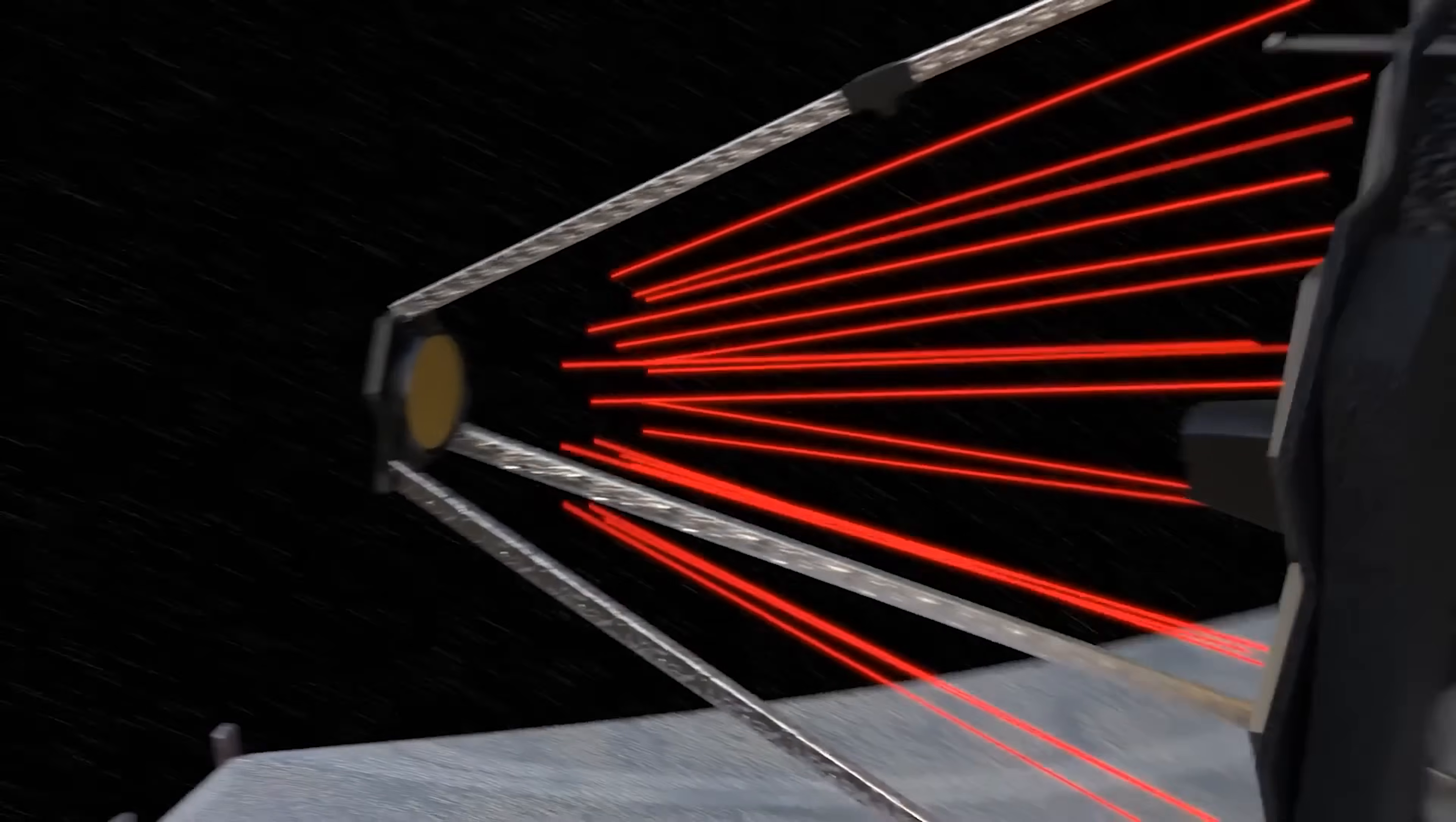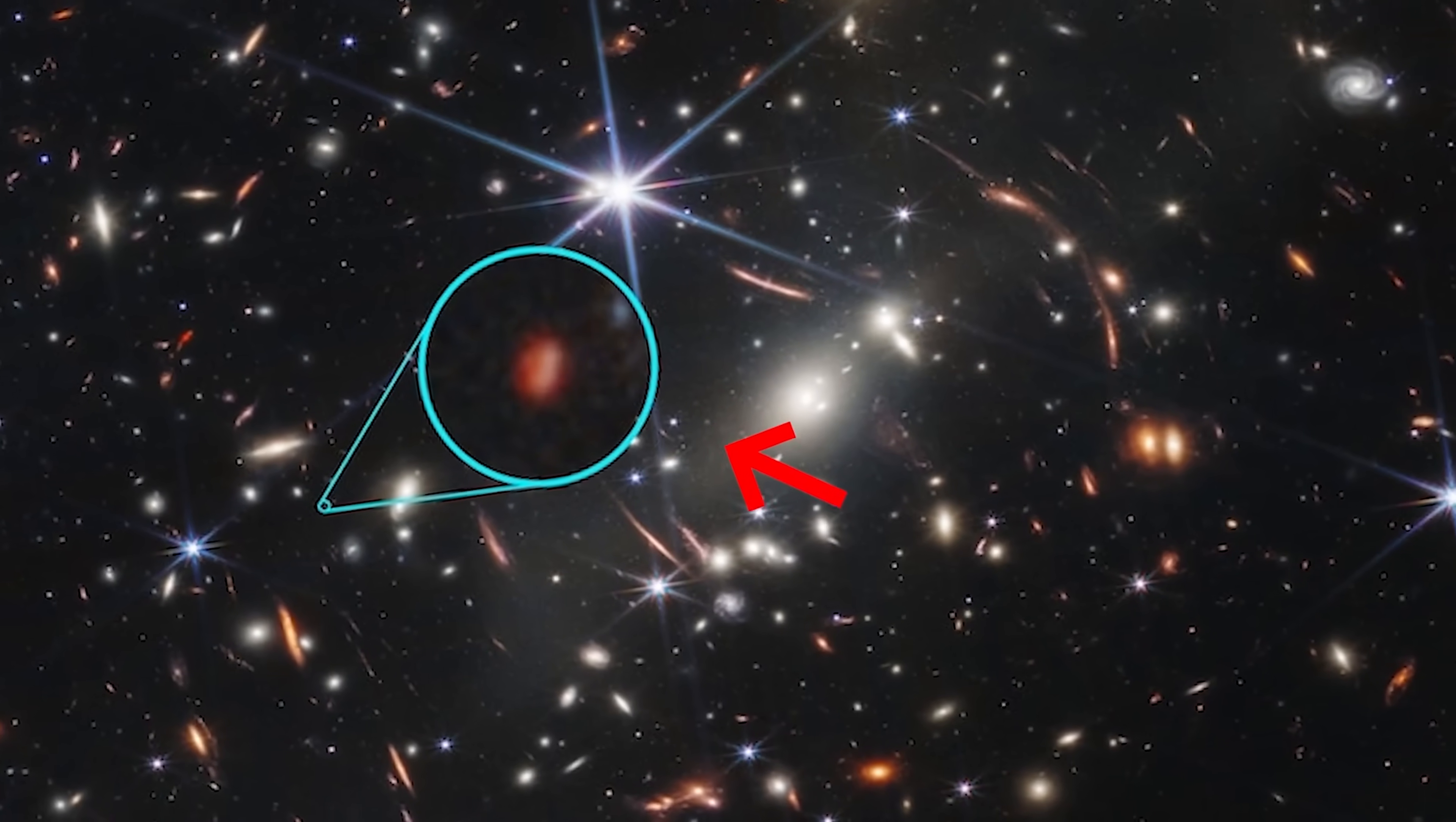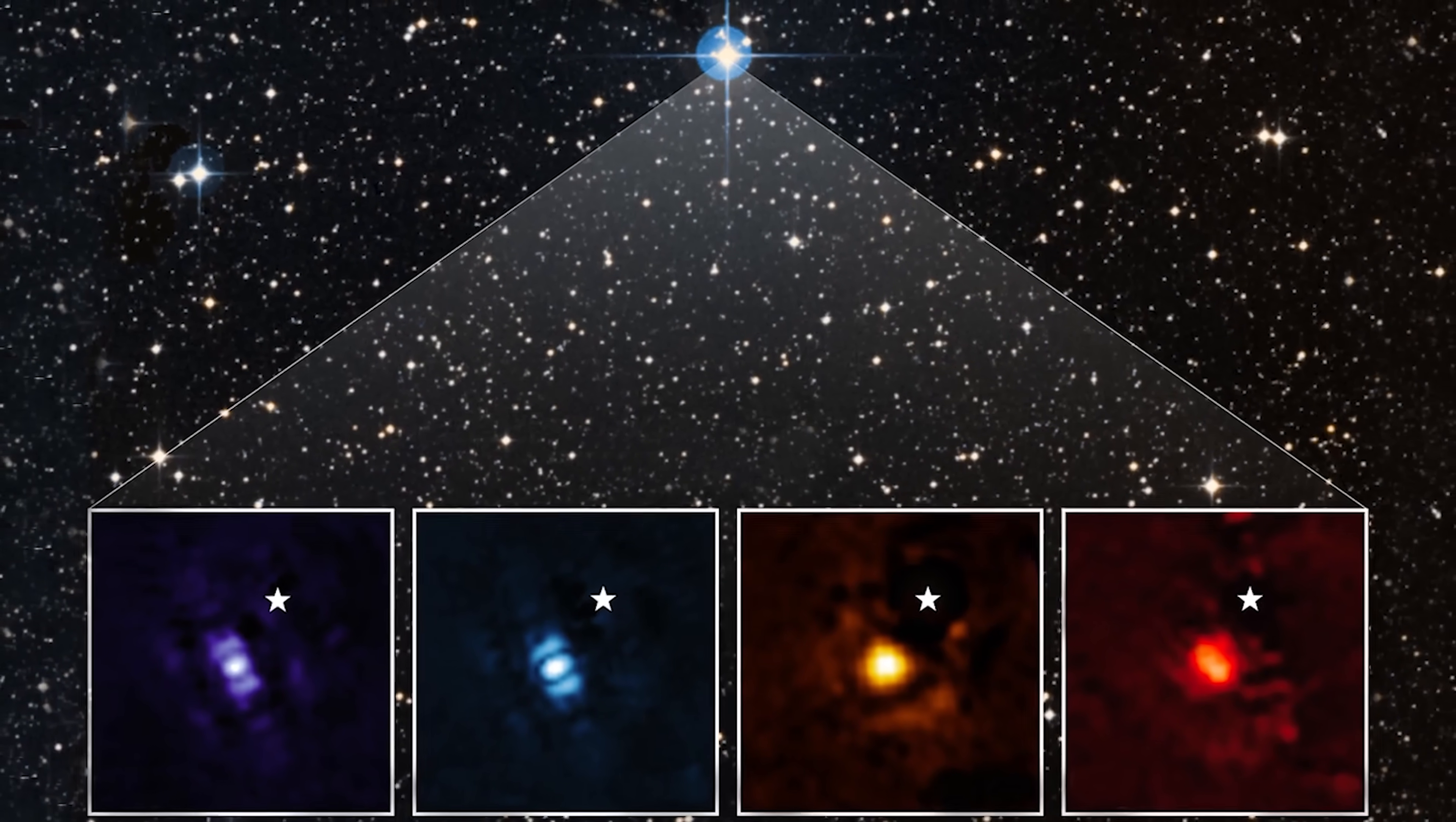We don't need an extensive introduction to the Webb Telescope. Its groundbreaking discoveries became apparent to the public in June 2022 when it captured its first deep field image, showcasing an astonishingly long exposure of a small patch of sky. This image unveiled the faintest and most distant galaxies ever observed as they emerged from the cosmic darkness.